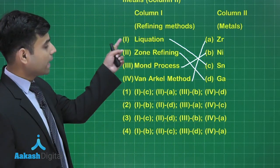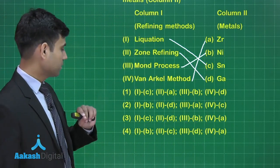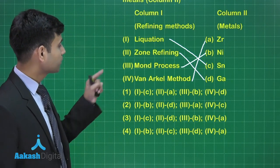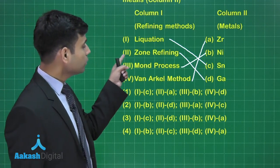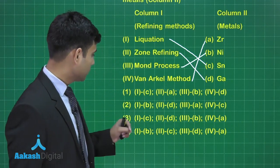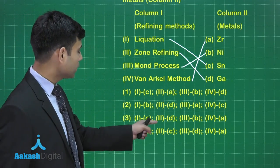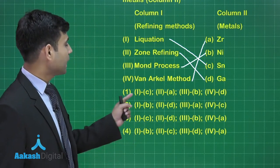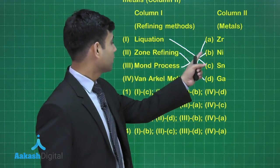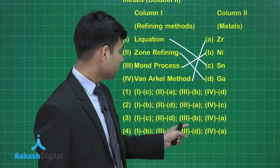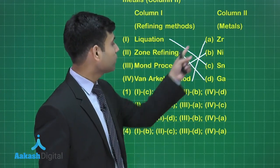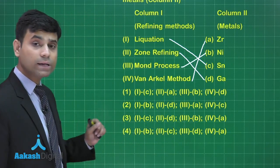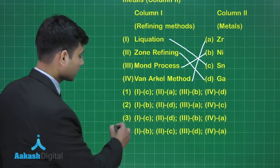So 1–C is given in options 1 and 3; 2–D is given in option 3 only. Matching 3 with B and 4 with A, the correct answer is given in option 3.